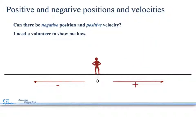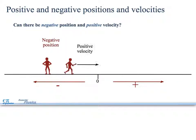Can there be a negative position and positive velocity? Here's negative position, positive velocity. You see the difference? So, you can move one way or the other and have positives and negatives. It's possible.